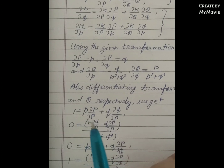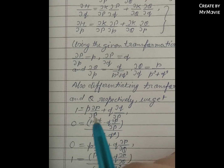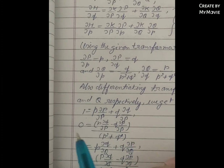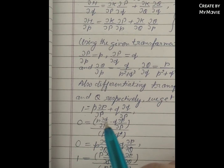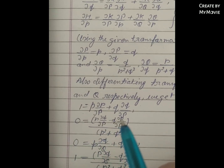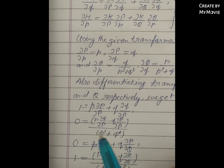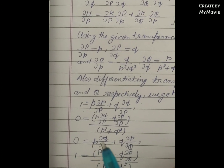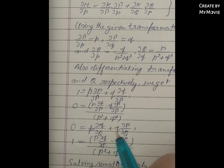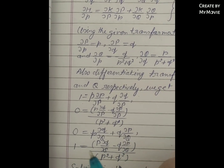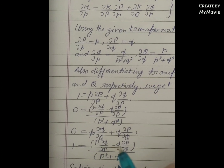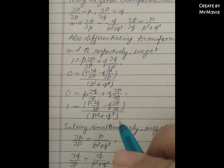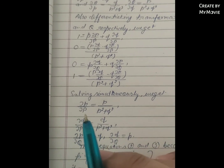We get: 1 = p(∂p/∂P) + q(∂q/∂P), and 0 = [p(∂q/∂p) - q(∂p/∂P)] / (p² + q²), and 0 = p(∂q/∂q) + q(∂p/∂q), and 1 = [p(∂q/∂Q) - q(∂p/∂Q)] / (p² + q²).